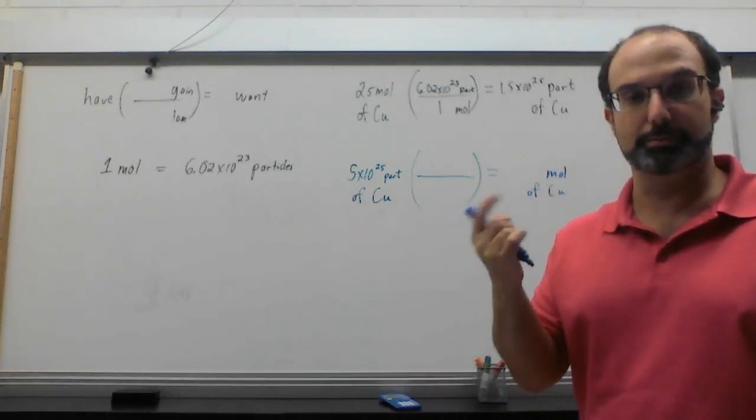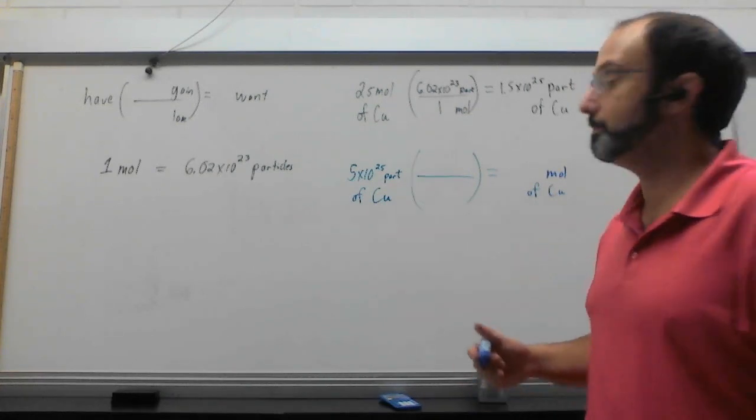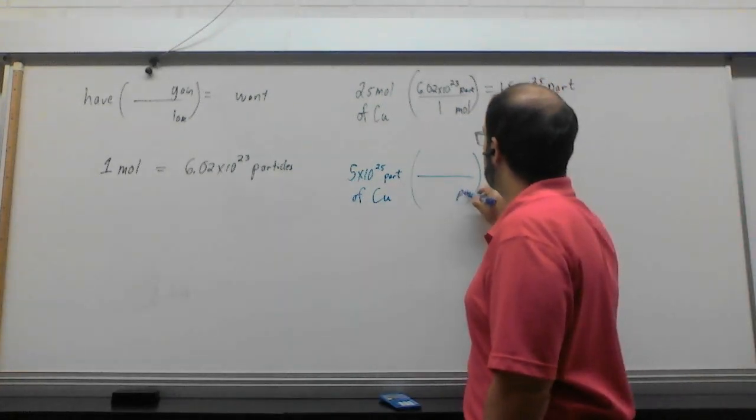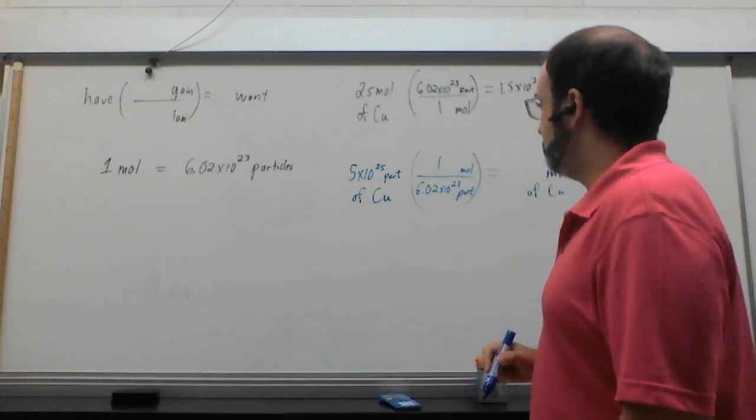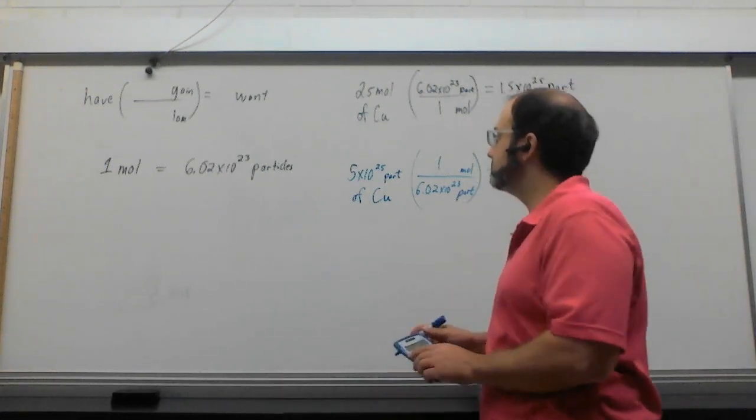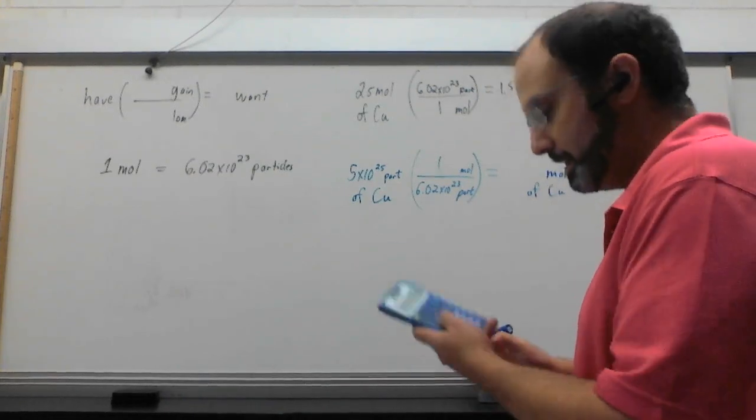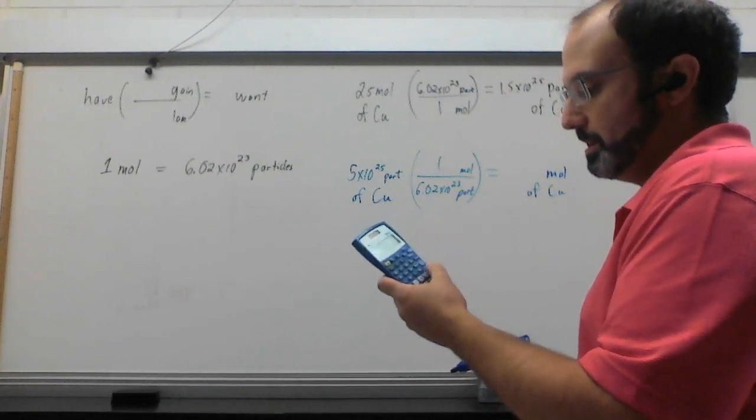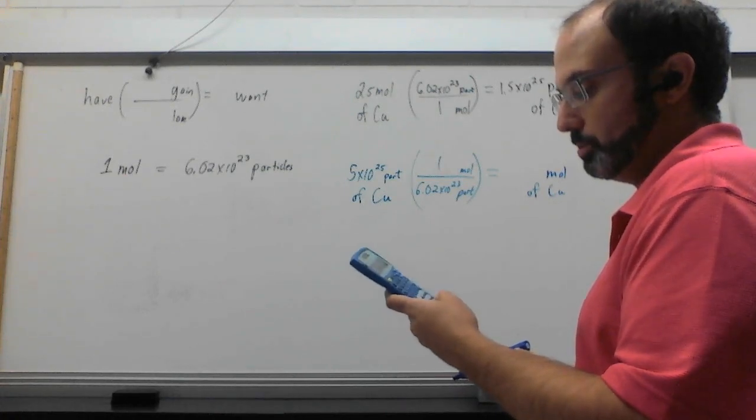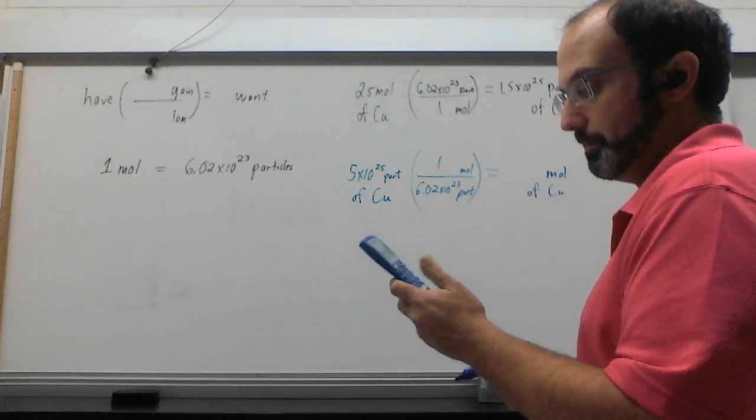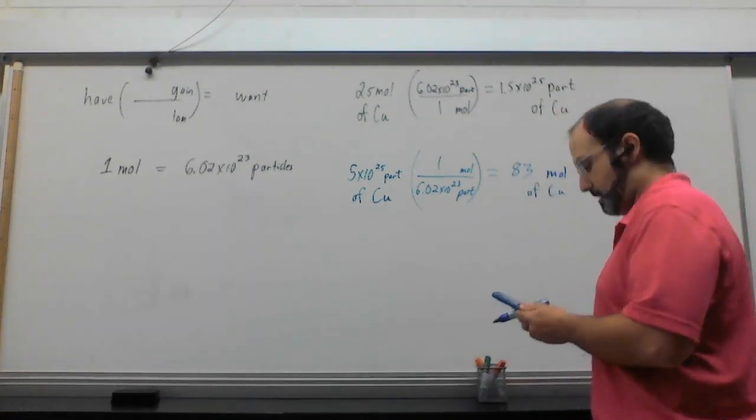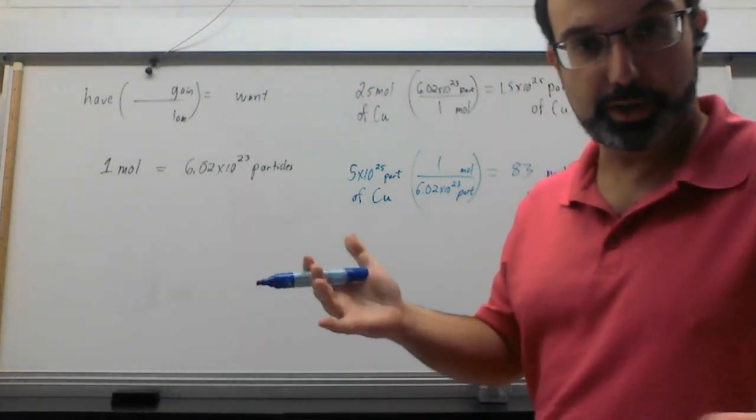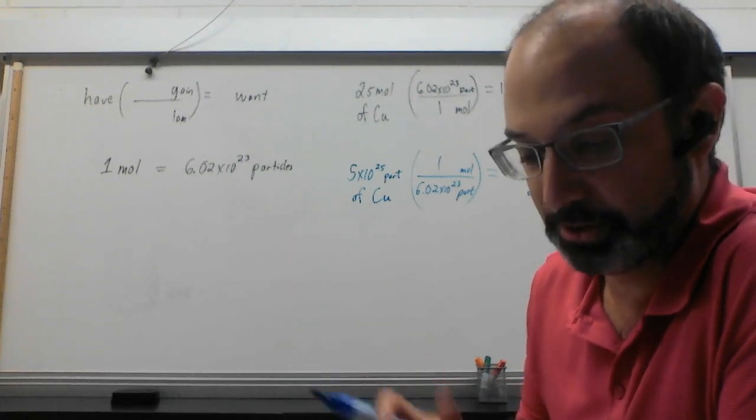So in this case, we're starting with particles and then we want moles, which means particles go on the bottom, moles go on the top. So we've got particles down here and moles up here. So moles is 1. Particles is 6.02 times 10 to the 23. So we're going to get, let's see here, 5 times 10 to the 25. 5 E 25 divided by 6.02 E to the 23. And that tells me that it is about 83 moles of copper. There we go.